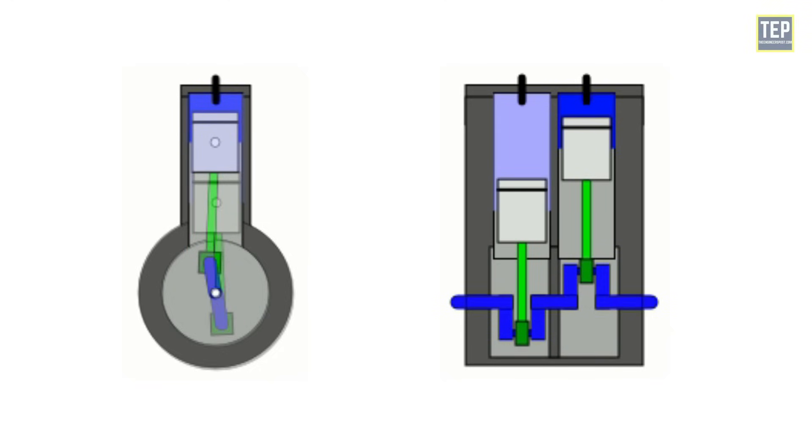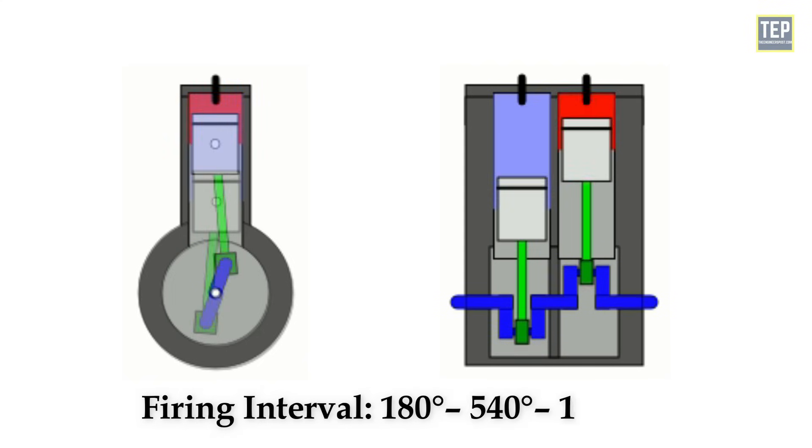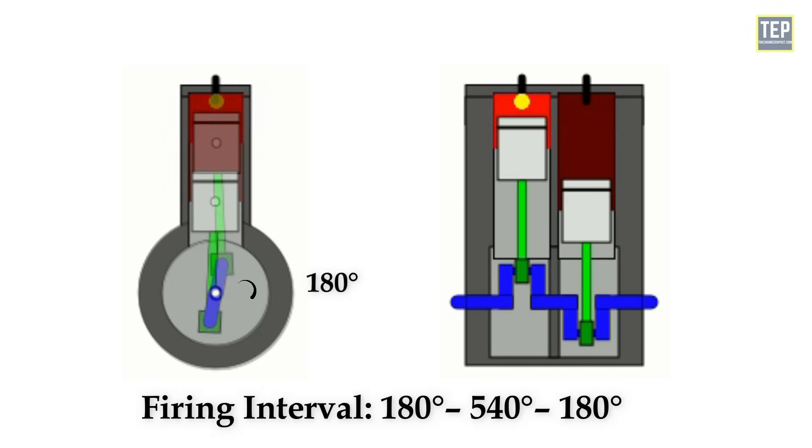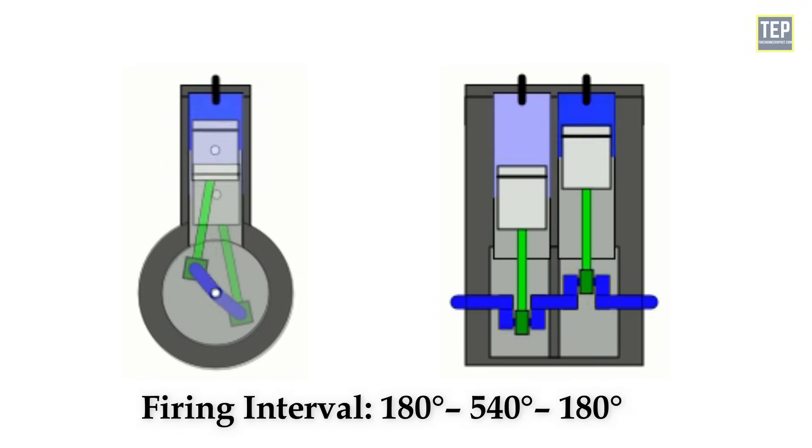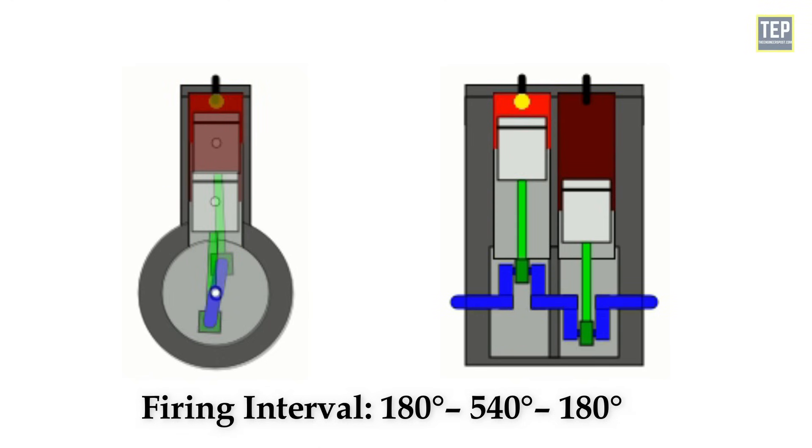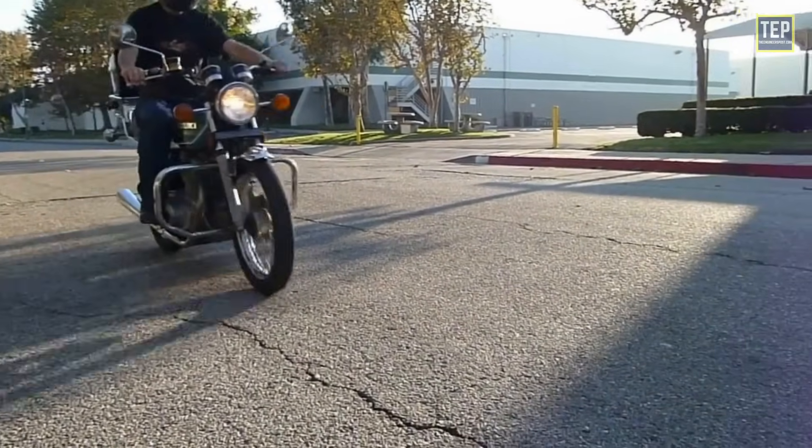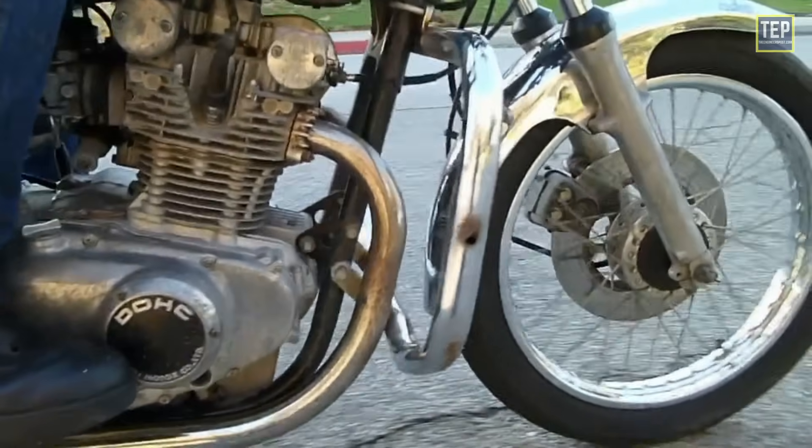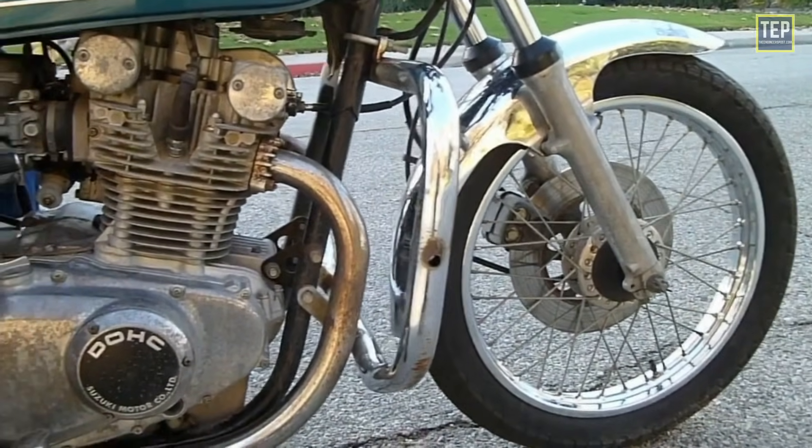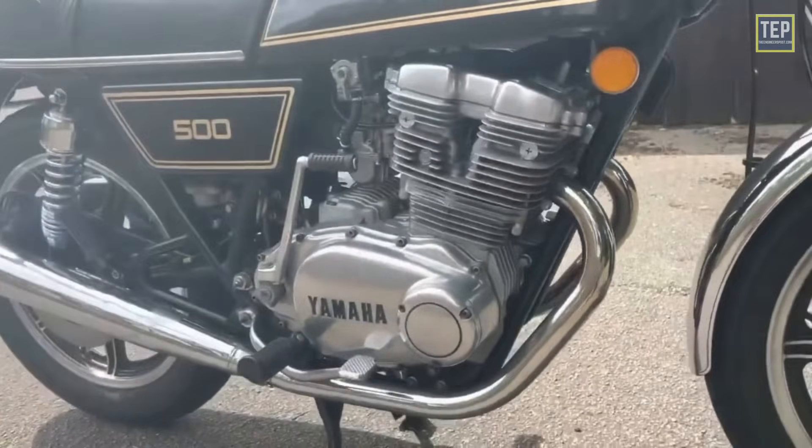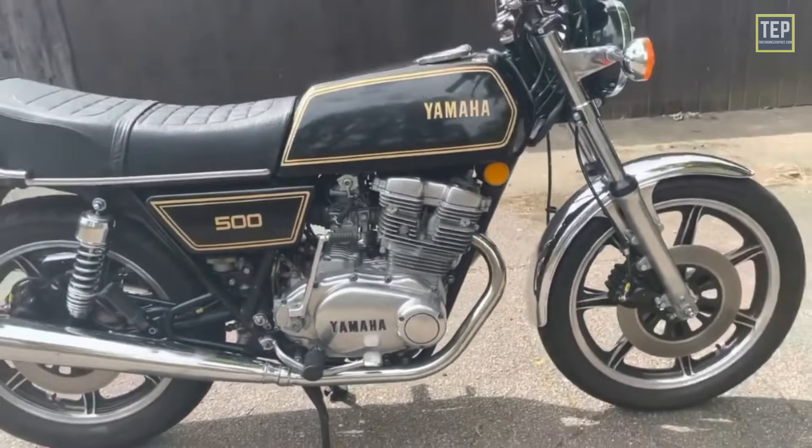In a four-stroke engine, the firing interval is uneven, with the second cylinder firing 180 degrees after the first, followed by a gap of 540 degrees until the first cylinder fires again. The uneven firing interval causes vibrations, resulting in a lumpy power delivery. A 180-degree engine also requires a separate ignition system for each cylinder.